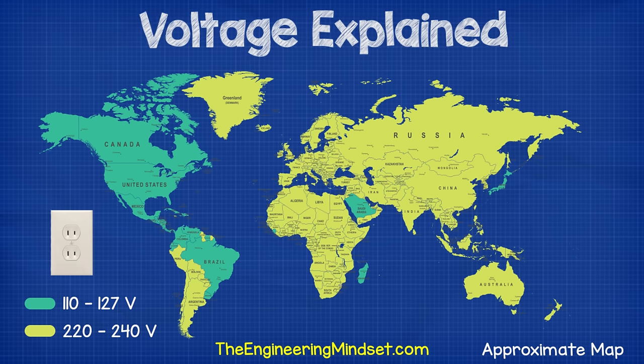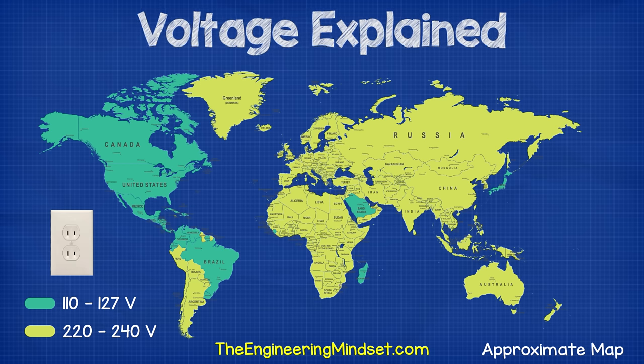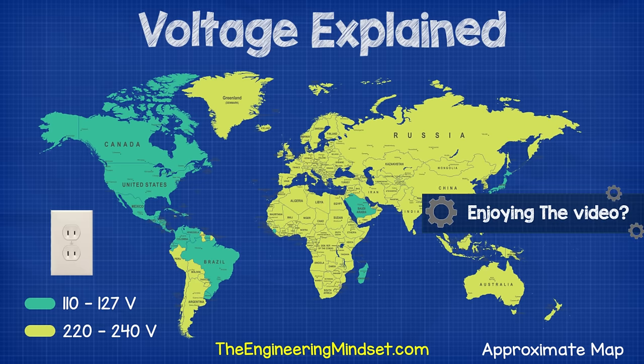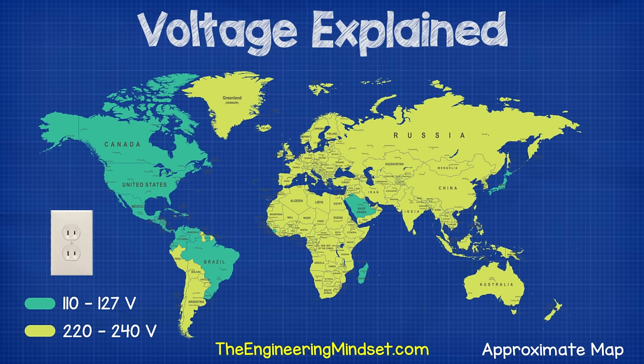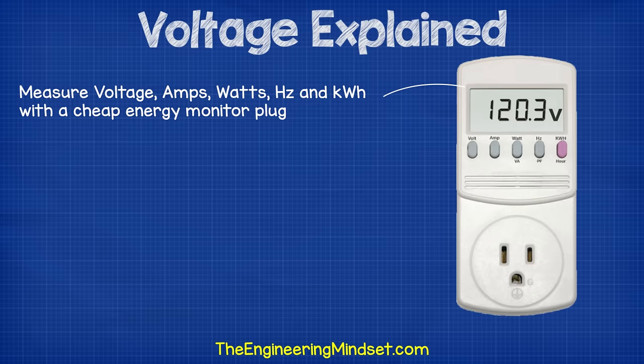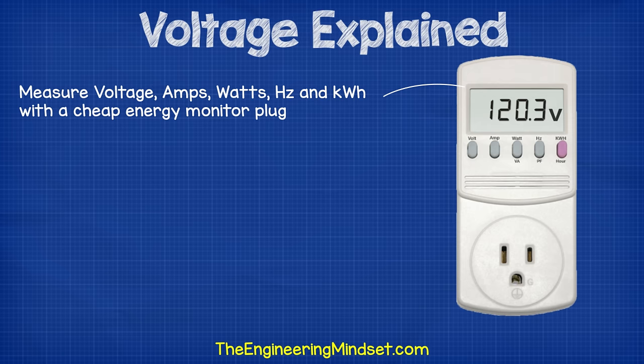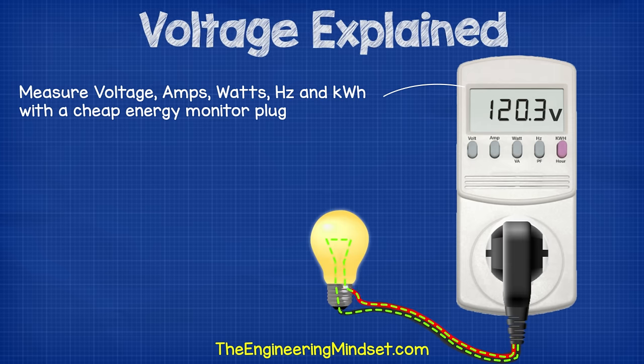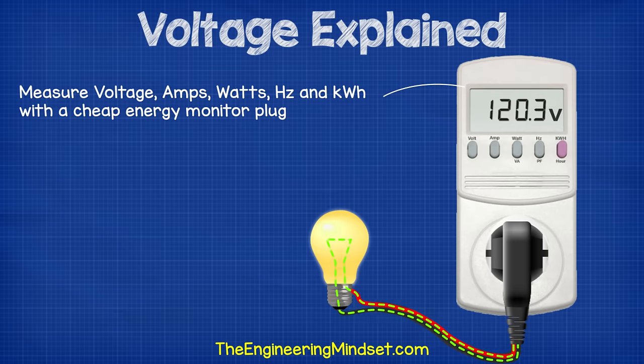The voltage at these sockets varies depending on where in the world we are. The majority of the world uses 220 to 240 volts. But North, Central, and some of South America, as well as a few countries scattered across the planet, will use 110 to 127 volts. We can measure the voltage at our sockets, and see that it actually changes slightly throughout the day, as the demand on the electricity network varies. And we can do that using one of these cheap energy meters. Again, links in the video description down below. If you want one of these, you can pick them up fairly cheaply, and they're a great device for your toolbox.